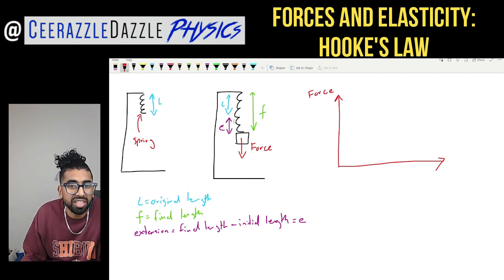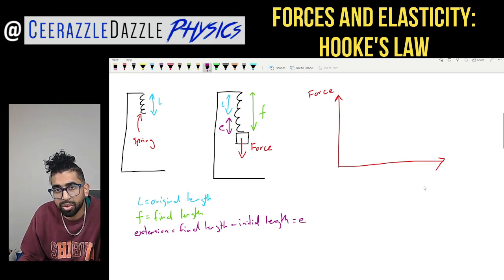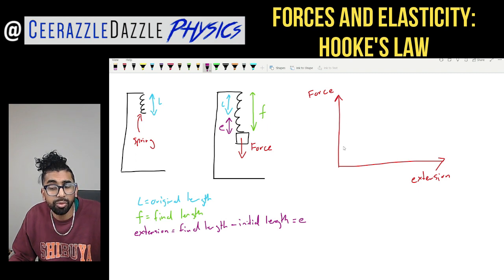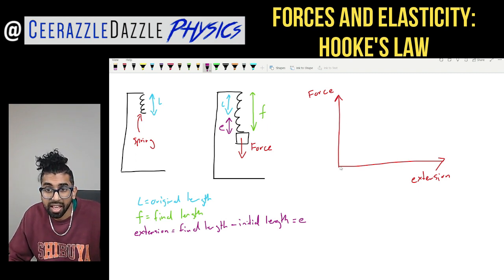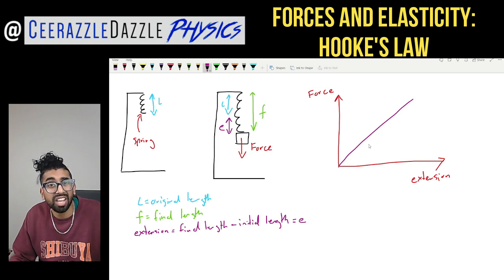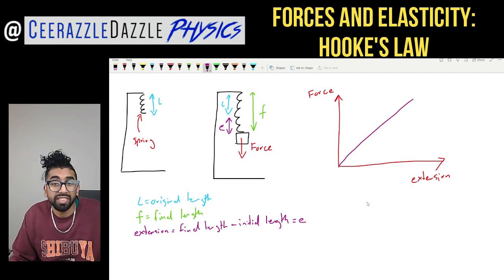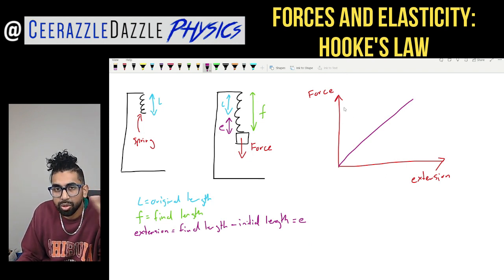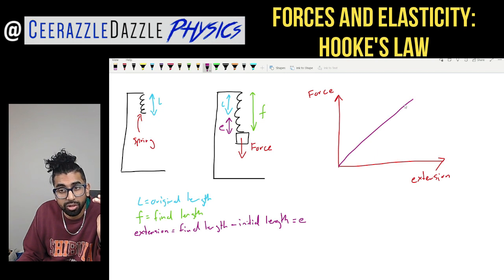Let's put force on the y-axis and extension on the x-axis. What kind of graph do you think you'll obtain? As you increase the force, the extension of the spring increases at a linear rate — it's a straight diagonal line. This is the force-extension graph we obtain using a spring. The more force you add, the more it extends.